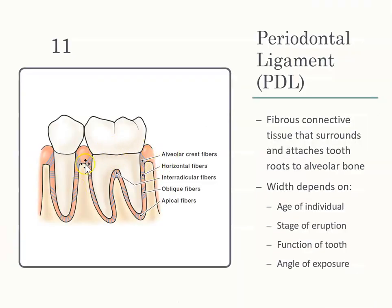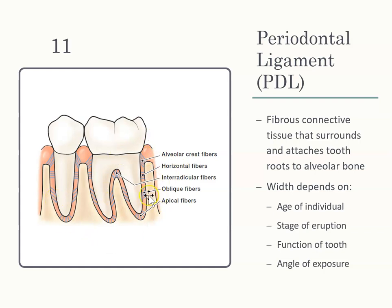Periodontal ligament fibers — we have five different types with specific names. Alveolar crest fibers are at the alveolar crest where fibers extend. Horizontal fibers go horizontally. One of the main reasons we have PDLs is to keep the tooth within the socket. PDLs are also good for nutrient transport — sending nutrients to areas of the tooth — and pain and pressure are transmitted through the PDL.